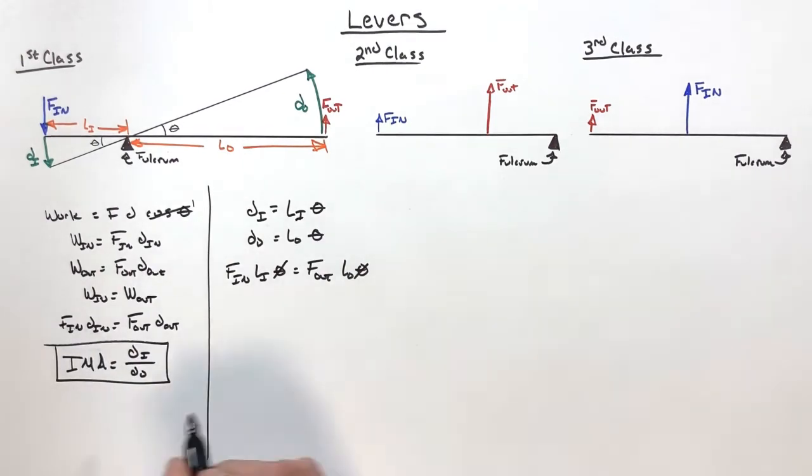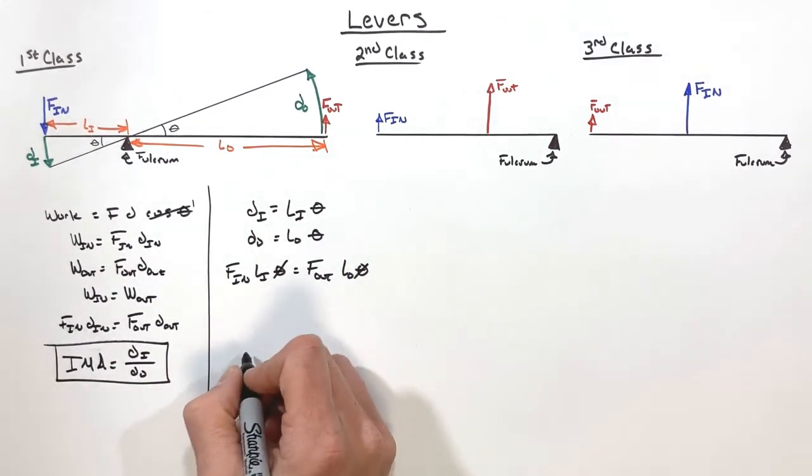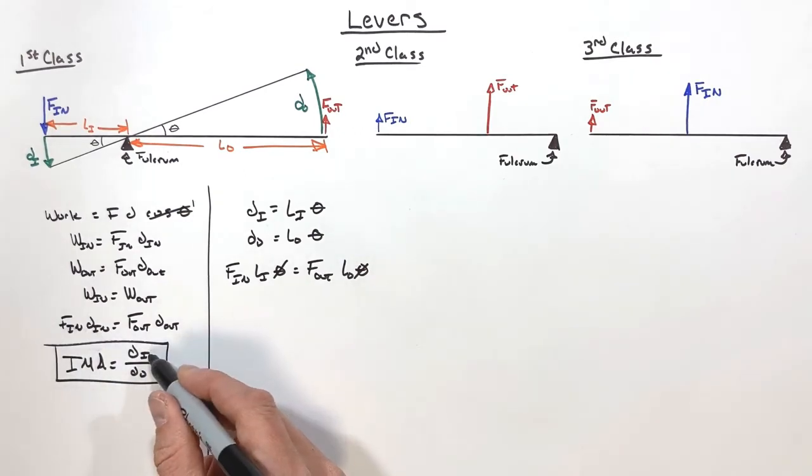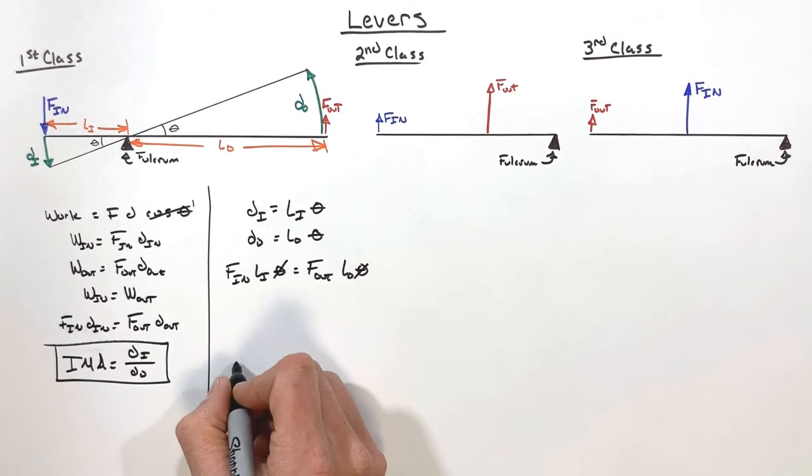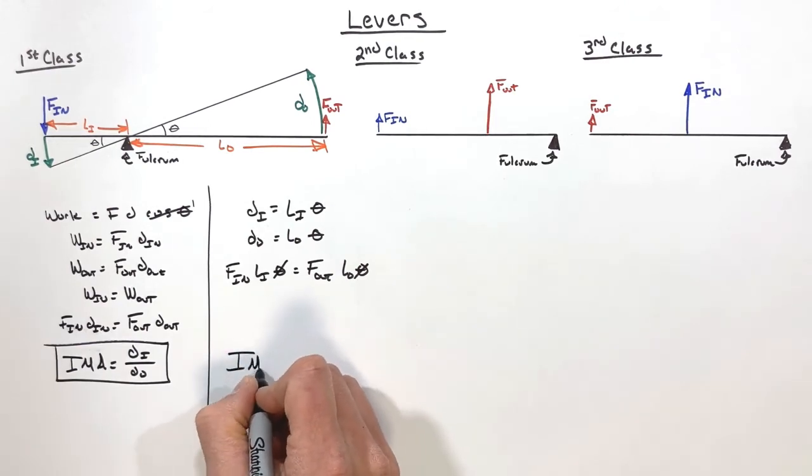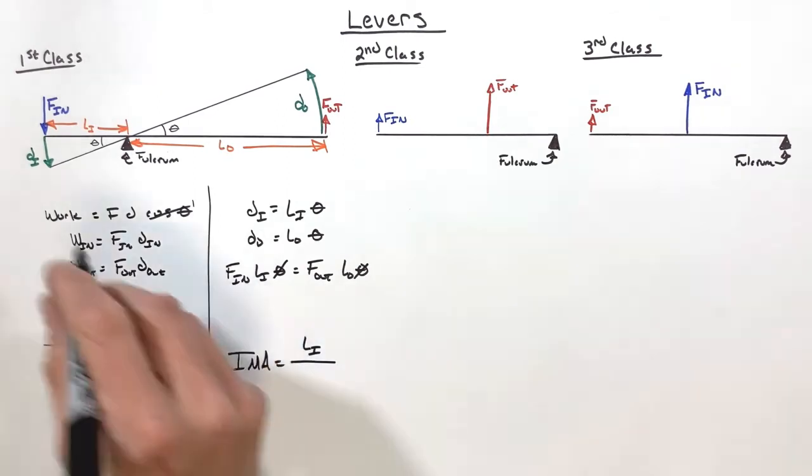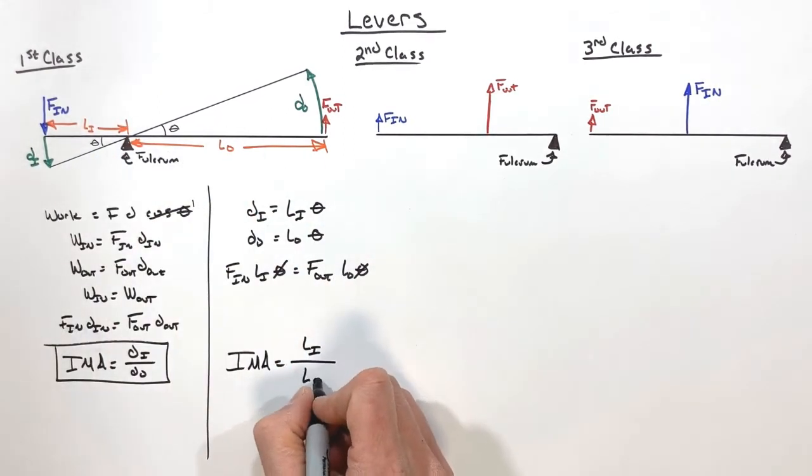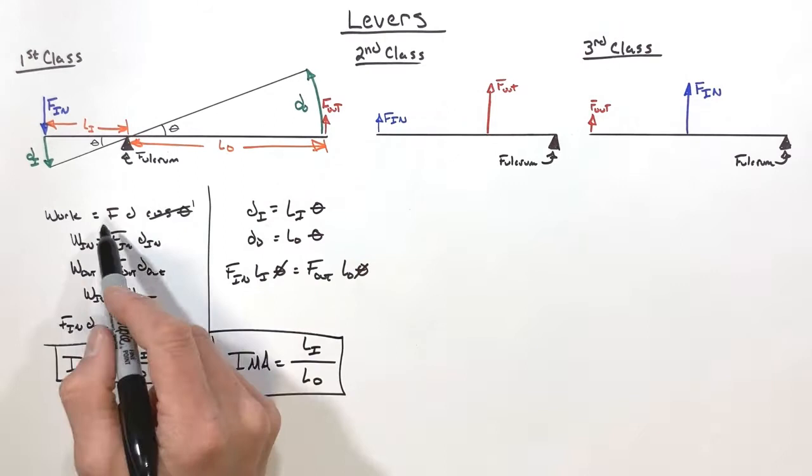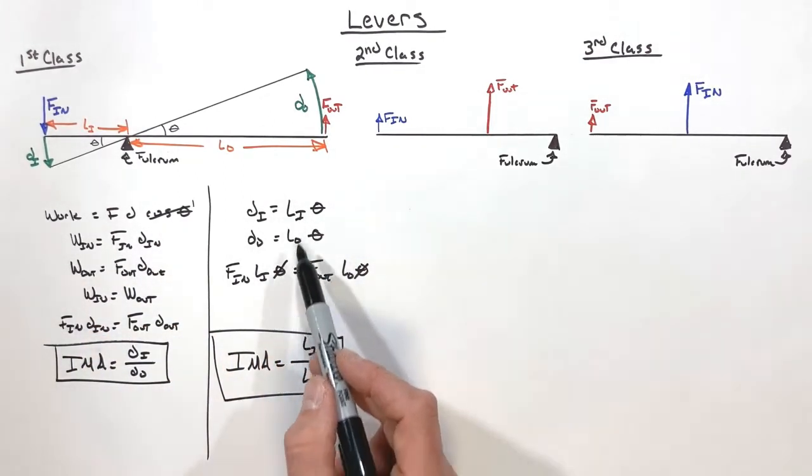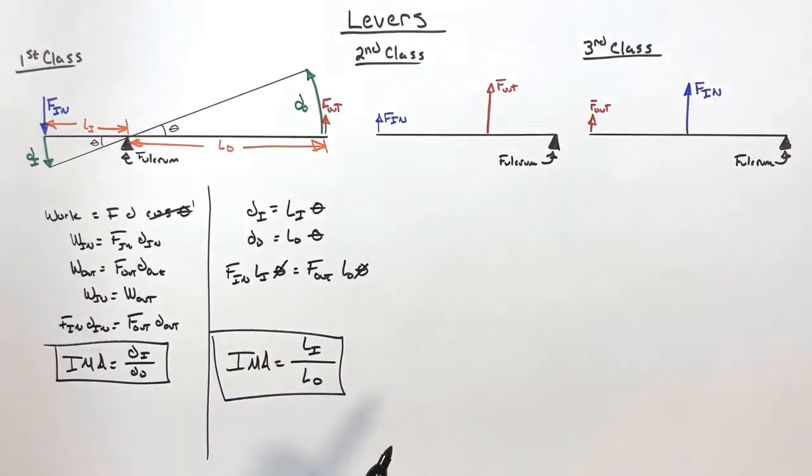And here's what this does for us: this allows us to look at the IMA of a lever not as the displacement on the input or output side, but we can also look at the IMA of this lever as being the length of the input arm over the length of the output arm. Looking at forces led us to this relationship, looking at this with respect to lengths leads us to this relationship.